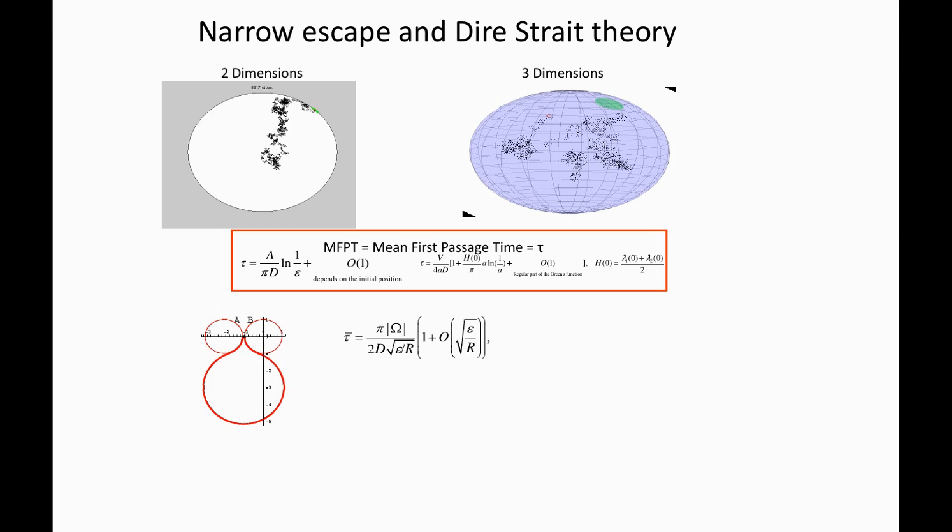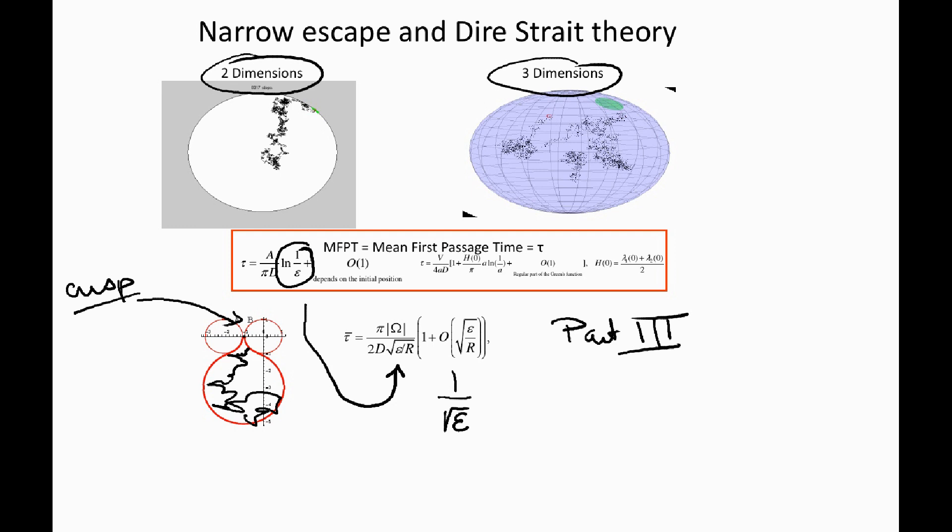Now I want to continue with another description: what happens when a Brownian particle moves inside a domain and has to find a hole which is hidden here in a cusp. We have seen the dimension two case, the dimension three case, but if you are in dimension two, we will see in part three of the class that now, instead of having the leading order term which is log of one over epsilon, the leading order term here is one over square root epsilon, which means that the time is suddenly much longer. The reason is that you have to find a target which is hidden here in the cusp.